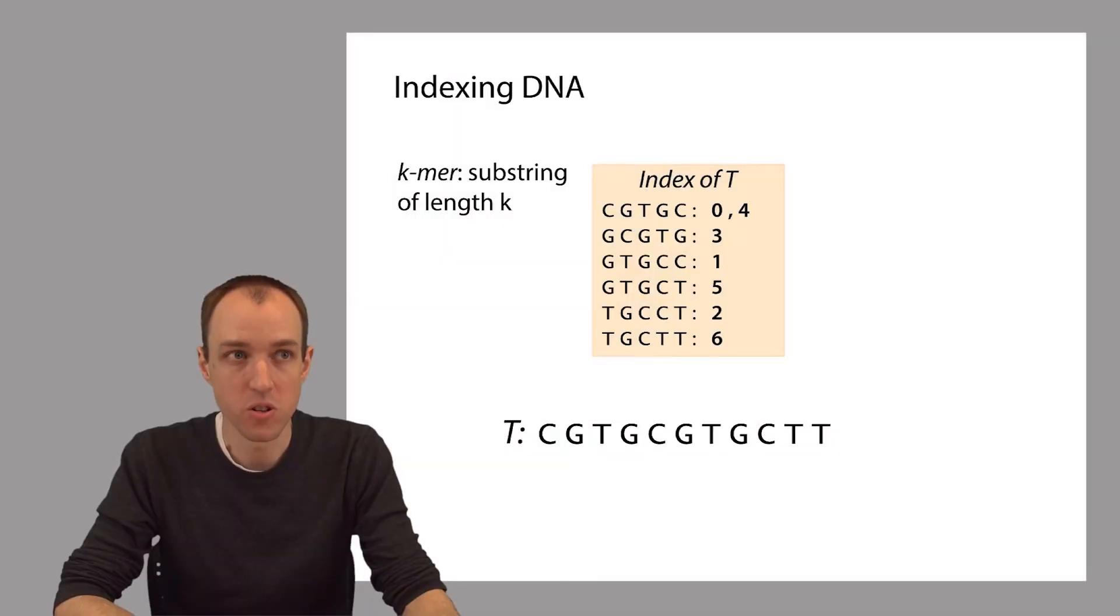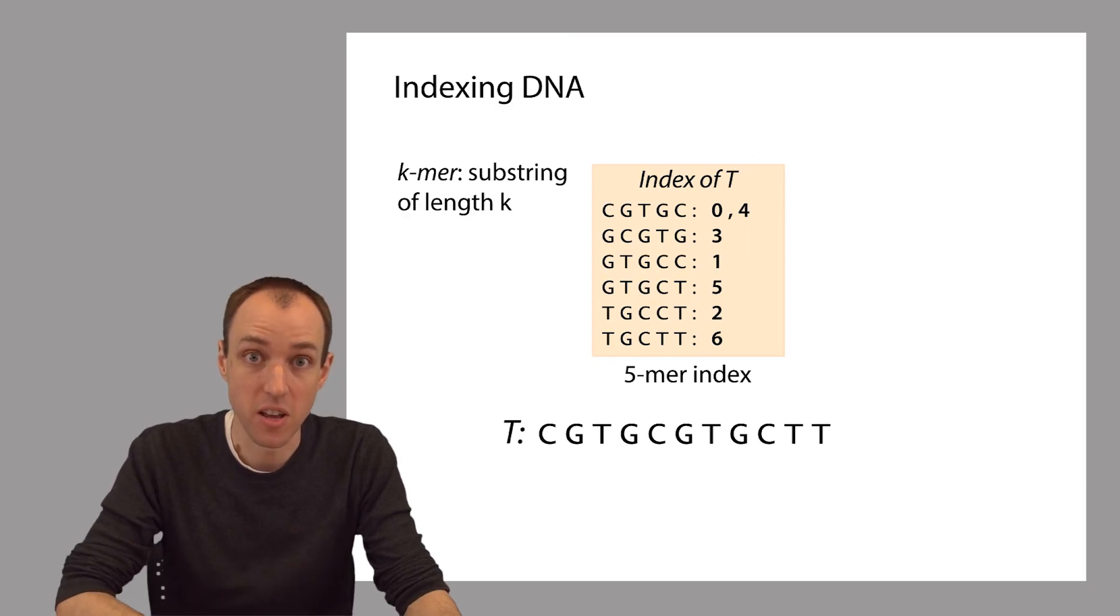There we go. That's our index. It's very analogous to the index of a book, except for the fact that we built it over all substrings of length 5. A quick piece of vocabulary: we use the term k-mer to refer to a substring of length k. So for substrings of length 5, we'll say 5-mer. This index we built where we took every 5-mer and inserted it so that for every 5-mer we were able to map it back to all the offsets where it occurred, we're going to call this a 5-mer index.